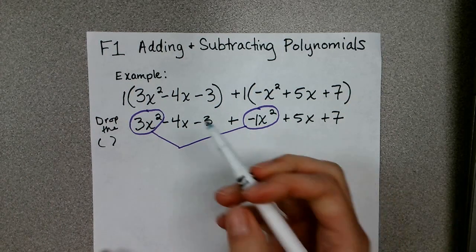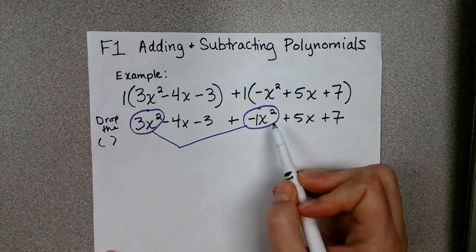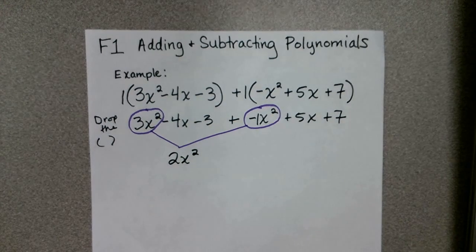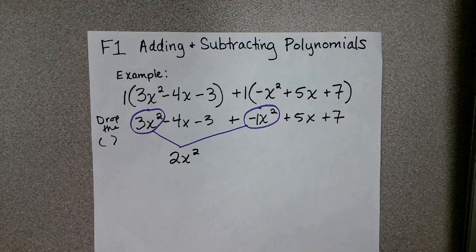And that's going to give me 3x² minus 1x² is 2x². Okay, then I'm going to look for other like terms.